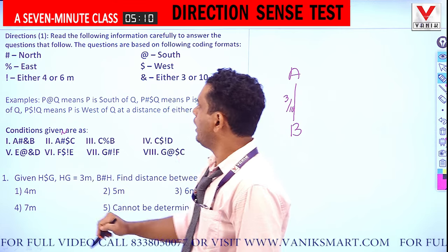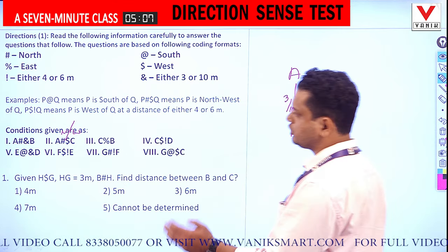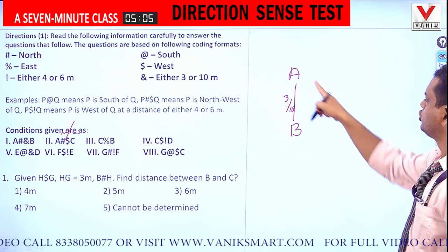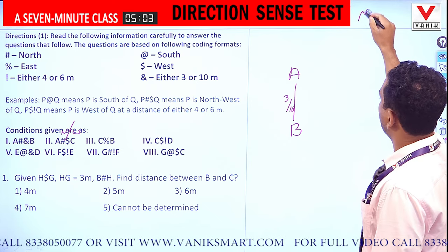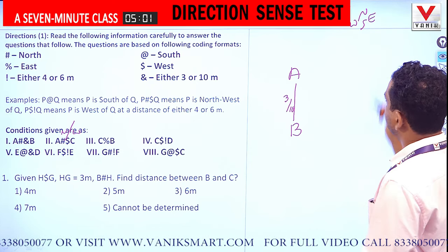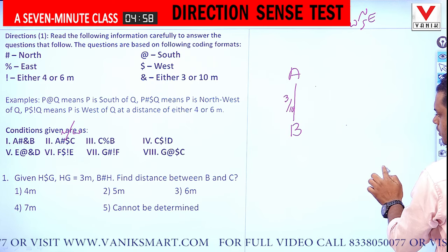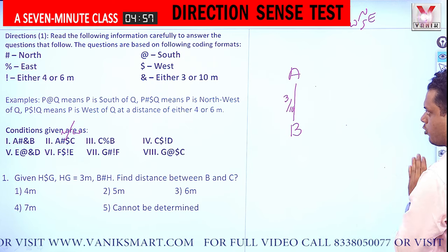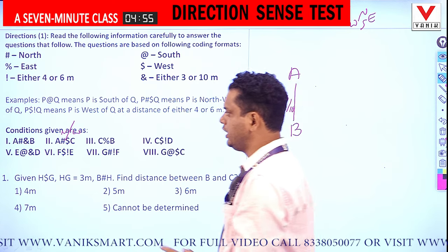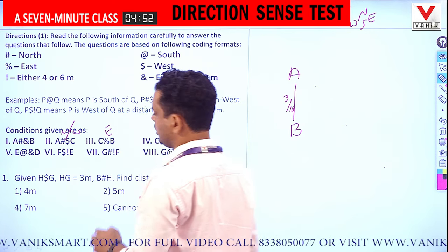Next condition: A # $ C. '#' means north and '$' means west, so A is northwest of C. A is northwest of C means — using north, south, east, west — the position of C could be in many possibilities, so I am waiting to confirm C's position.